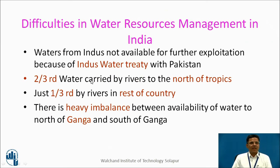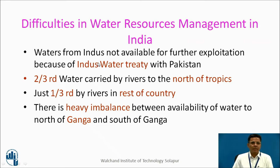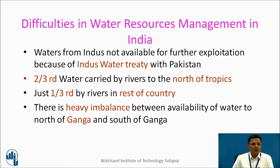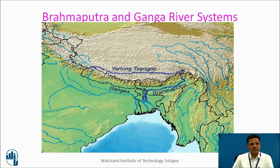What are the difficulties in water resources management in India? Water from the Indus (Sindhu) is not available for further exploitation because of the Indus Water Treaty with Pakistan. Two-thirds of water is carried by the rivers to the north — that is in North India — and just one-third is in the rest of the country. Thus, there is a heavy imbalance between the availability of water to the north of Ganga and south of Ganga.